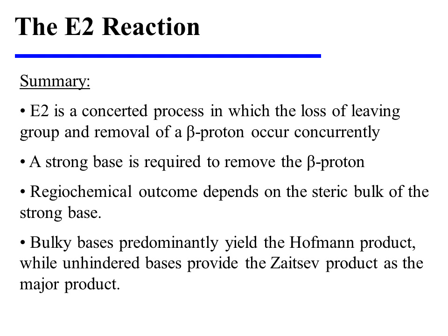In summary, the E2 reaction is a concerted process in which the loss of leaving group and removal of a beta proton occur concurrently. A strong base is required to actively remove the beta proton, and the regiochemical outcome depends on the size of that strong base. Bulky bases predominantly yield the Hoffman product, while unhindered bases will yield the Zaitsev product instead.